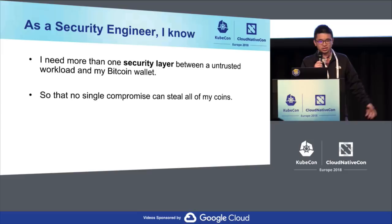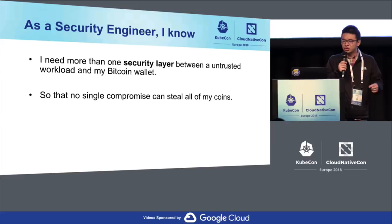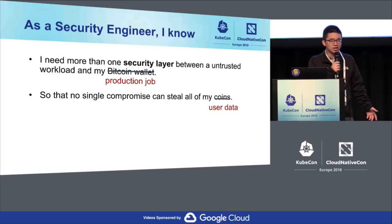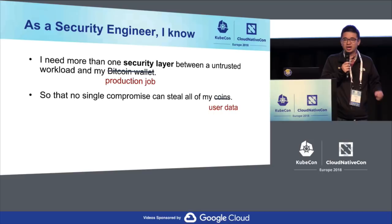On the other side, as a security engineer, I know I need more than one security layer between untrusted workloads and my Bitcoin wallet. The principle is simple: no single compromise can steal all my coins. Surprisingly, this is the same principle we use at Google — just replace Bitcoin wallet with a production job and coins with user data. This is exactly the principle we used when designing the sandbox.